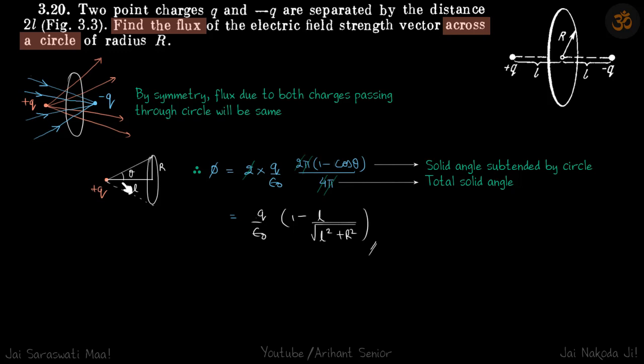So flux through this solid angle is this solid angle due to the cone divided by the whole solid angle, times the total flux that crosses a closed region around plus Q. That we know is Q by epsilon naught, the total flux in a closed region, multiplied by the fraction of this solid angle which is 2π times one minus cos theta divided by 4π.